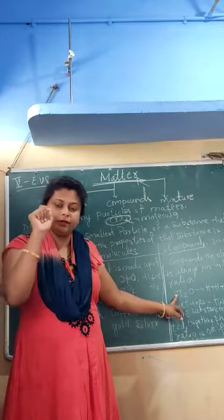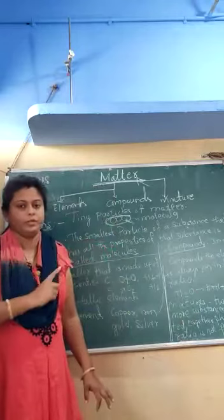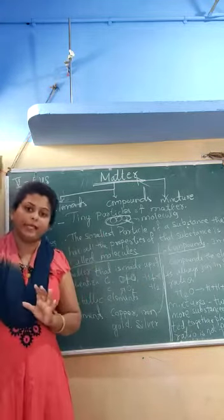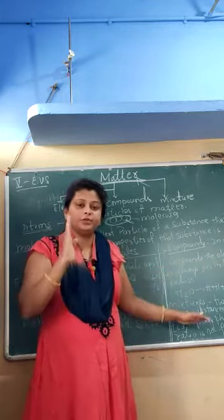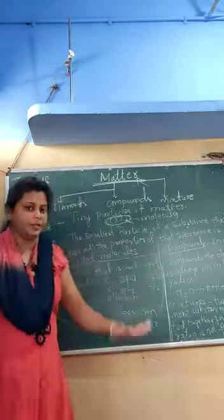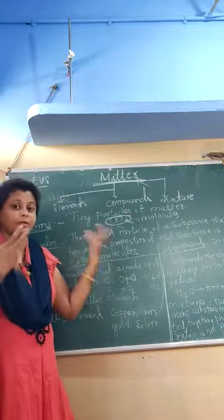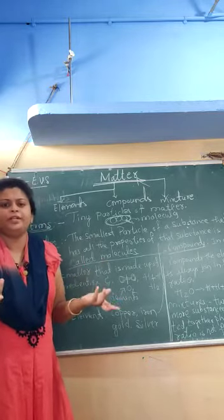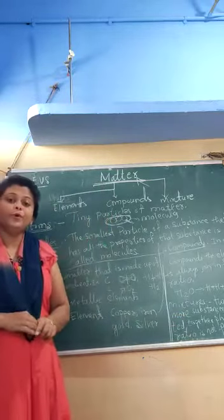For example, in a drop of water, every molecule has H2O — two hydrogen atoms and one oxygen atom. That fixed ratio is what forms the water molecule. If you change it to H2 and O4, it will not be water; it becomes another substance. So in a compound, elements join in a fixed ratio. But in a mixture, there is no fixed ratio — two or more substances combine with no definite proportion.